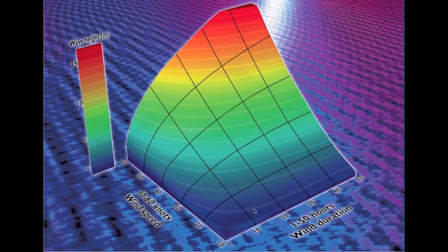Let's start at 10 knots. As you can see 10 knots blows for 10 hours. You're still way under a meter. 20 hours, 30, right up to 50. You can see it's still under a meter. So 10 knots is not going to cause you too many problems.